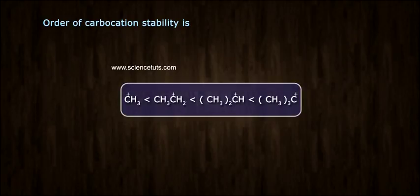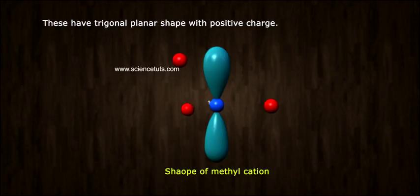Order of carbocation stability is tertiary, secondary, primary. These have triangular planar shape with positive charge.